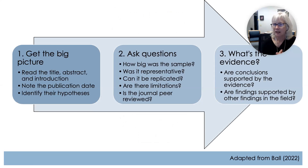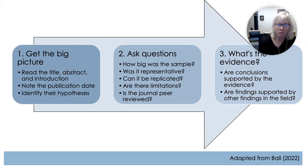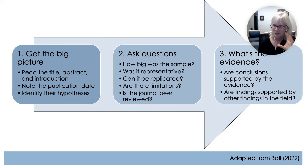Here's another way of thinking about the process of reading a paper. First, you start with the big picture: read the title, abstract, and introduction. When was this published? Generally, we value more recent articles more than older ones. What are their hypotheses? Then you're going to ask some big questions: How big was the sample? Was it representative? Can it be replicated? Are there limitations to the study? Is the journal peer reviewed? Catch some of the errors — what's the evidence?